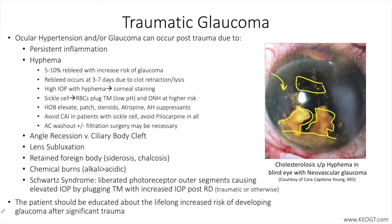Choroidal hemorrhage may lead to elevation in intraocular pressure, both due to the volume effect of blood accumulating in the eye, as well as disruption of outflow of aqueous humor with shallowing of the anterior chamber and potential synechial closure without intervention. Schwartz syndrome, which is the liberation of photoreceptor outer segments causing elevation of IOP by plugging the trabecular meshwork with increasing intraocular pressure post-retinal detachment, should also be on the list of potential causes of IOP rise post-trauma.